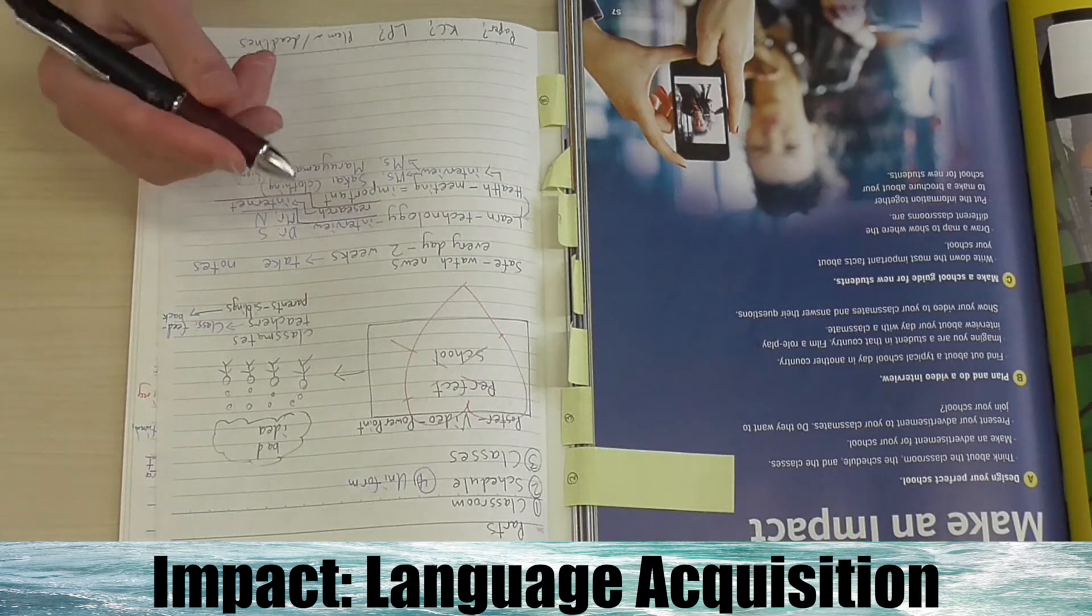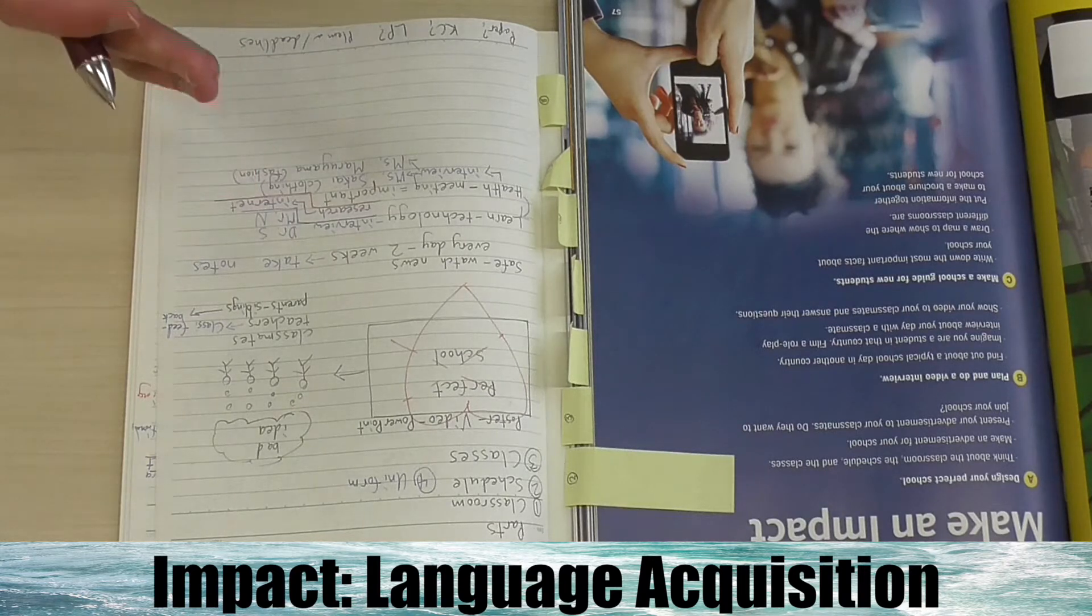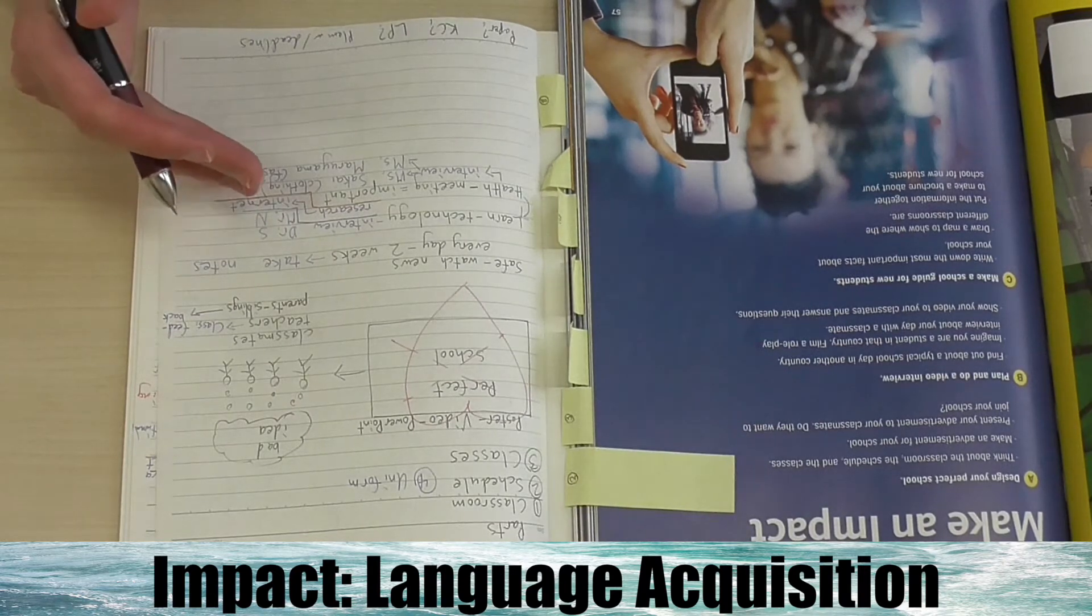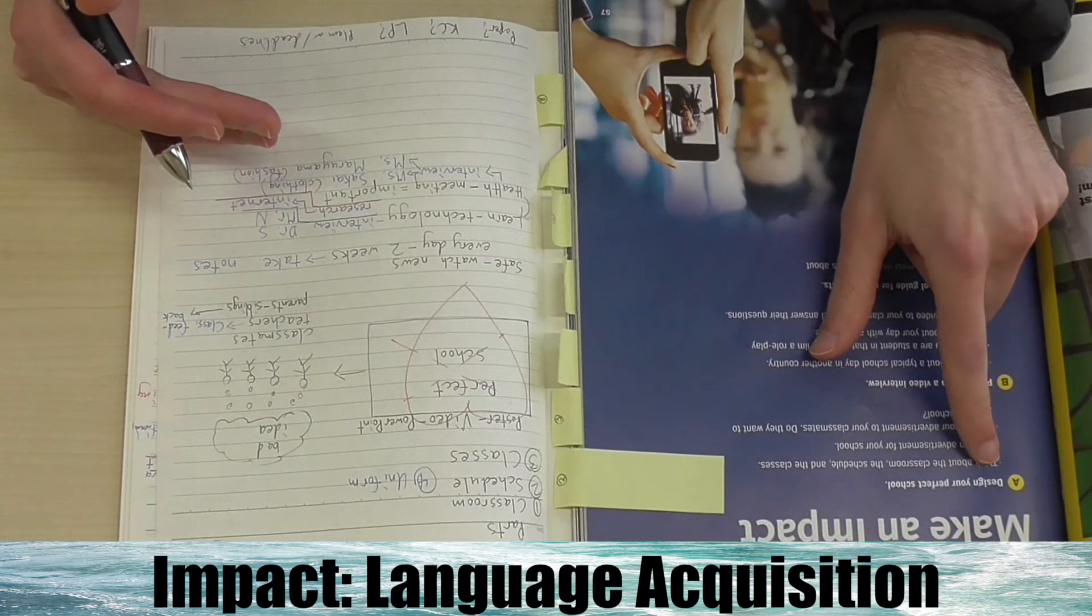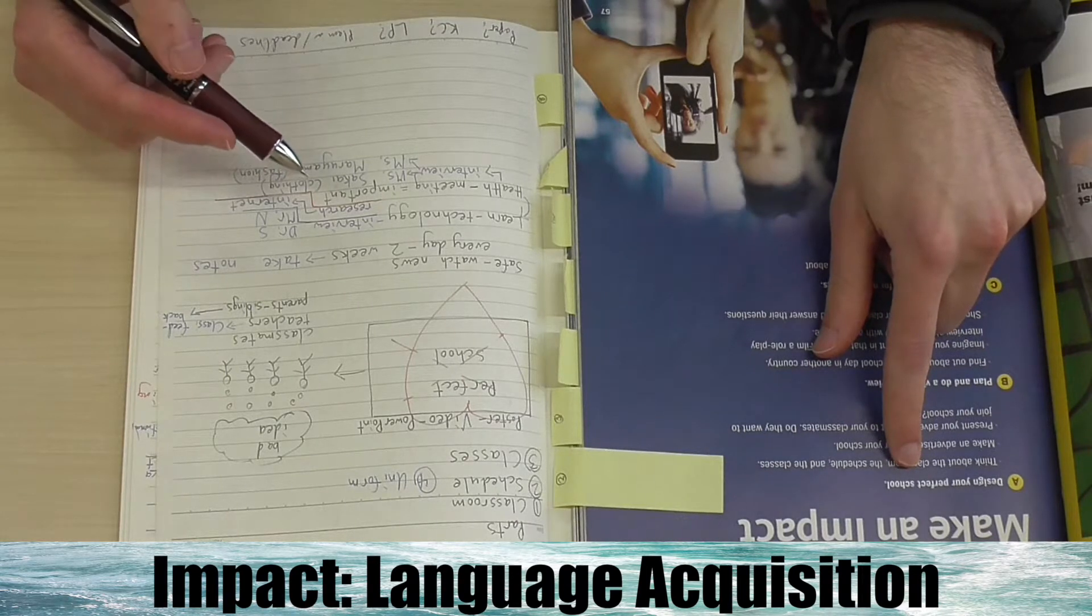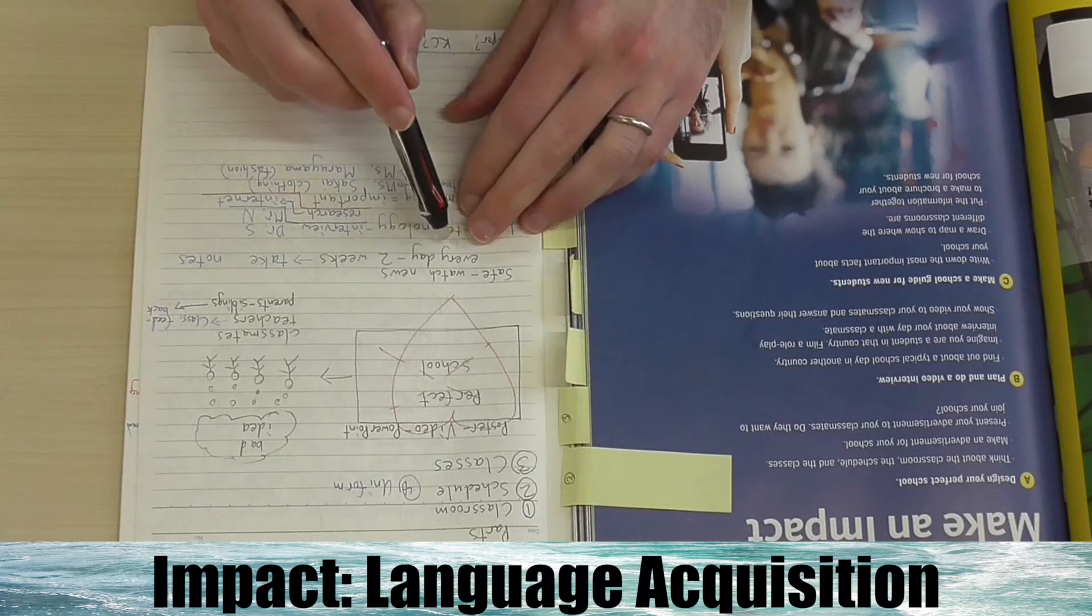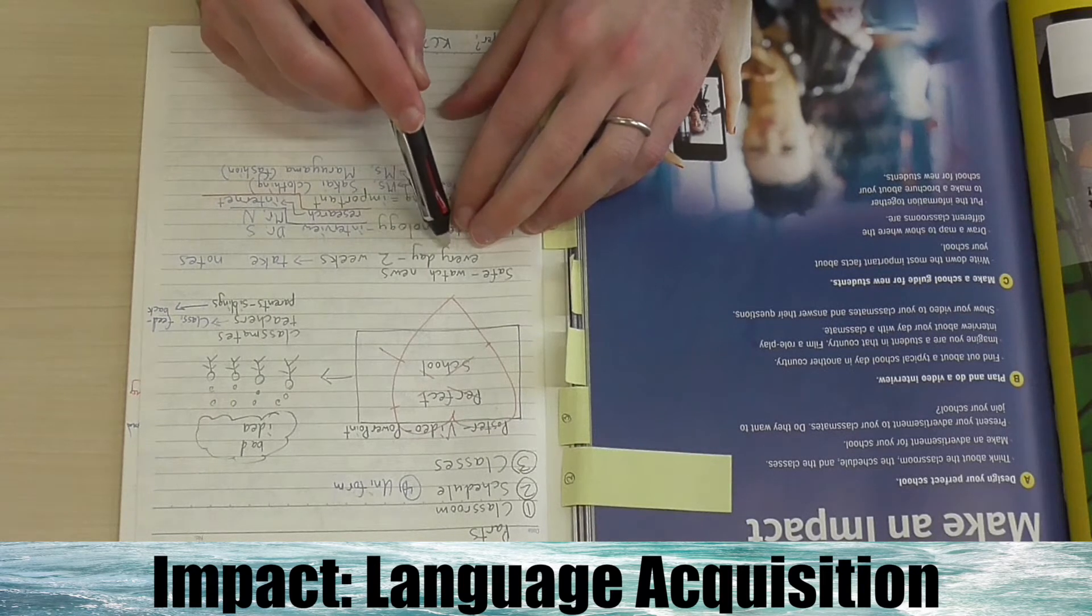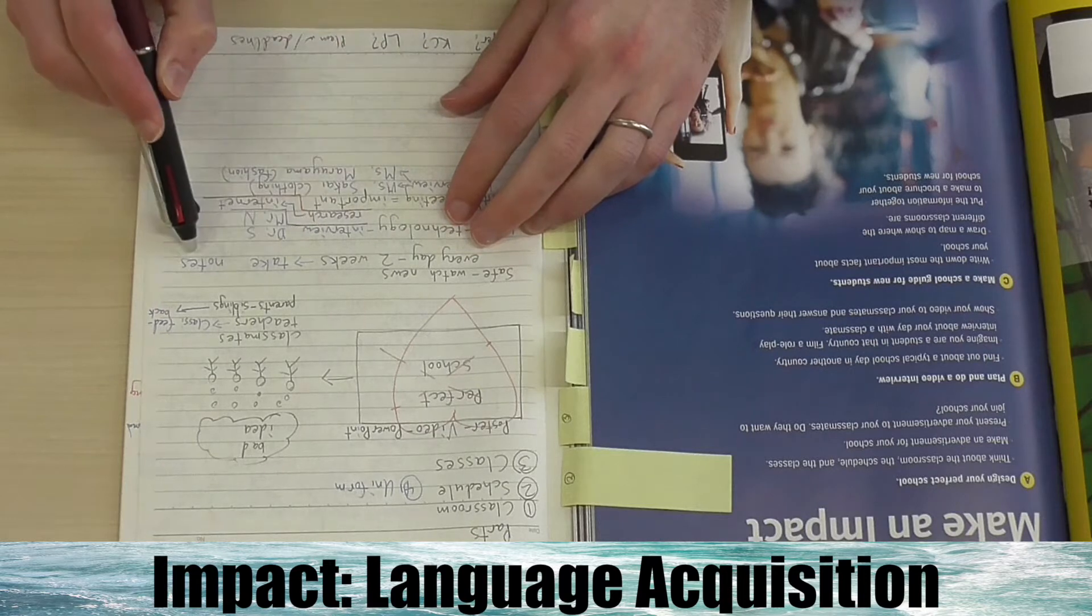Okay, I'm here and it's been one week since I chose my Make an Impact project. I chose to design my perfect school. It's been one week and I did very good at watching the news every day for the first of two weeks and I took notes.